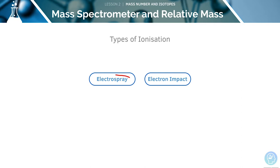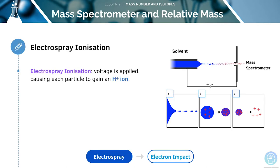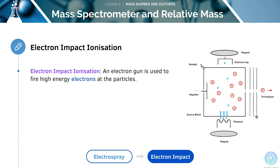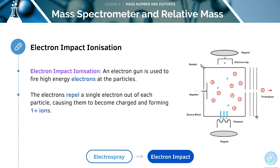The second ionisation method is electron impact ionisation. Here, an electron gun is used to fire high-energy electrons at the particles. The electrons repel a single electron out of each particle, causing them to become charged and form 1+ ions.